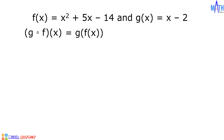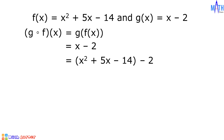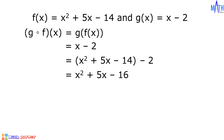Since f of x is equal to x squared plus 5x minus 14, we will substitute this to x in g of x. g of x is equal to x minus 2. x becomes x squared plus 5x minus 14, minus 2. Since negative 14 minus 2 is equal to negative 16, g of f of x is equal to x squared plus 5x minus 16.